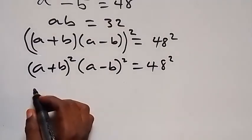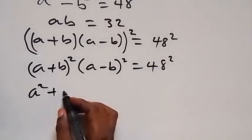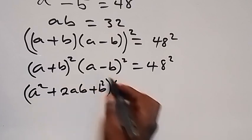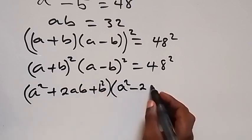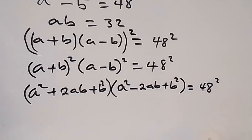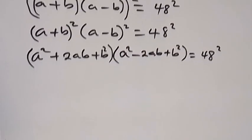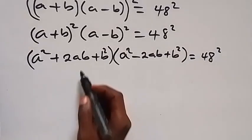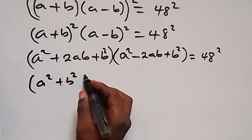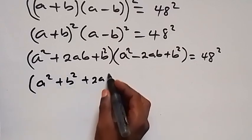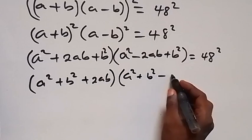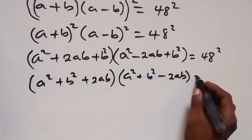Expanding the first bracket gives a squared plus 2ab plus b squared, and the second bracket gives a squared minus 2ab plus b squared, which equals 48 squared. Bringing the squared terms together, we have (a squared plus b squared plus 2ab)(a squared plus b squared minus 2ab) equals 48 squared.